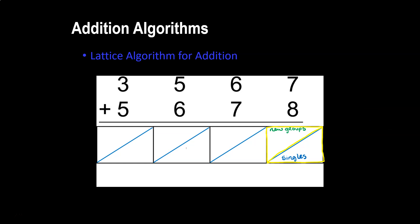Adding the numbers in our ones place, 7 plus 8 equals 15. But we also know that 15 is one group of 10 and 5 singles. So I'll put 5 in the singles portion and acknowledge that we were able to make one new group of 10 by putting 1 in the new groups.